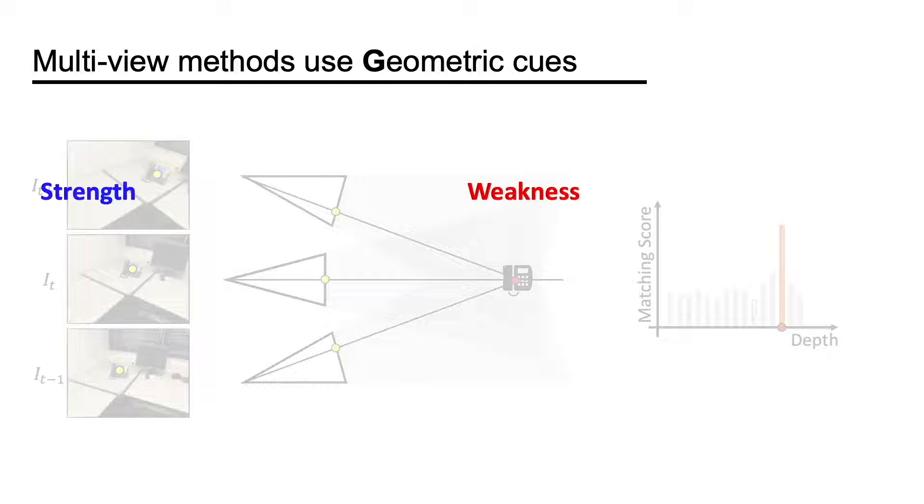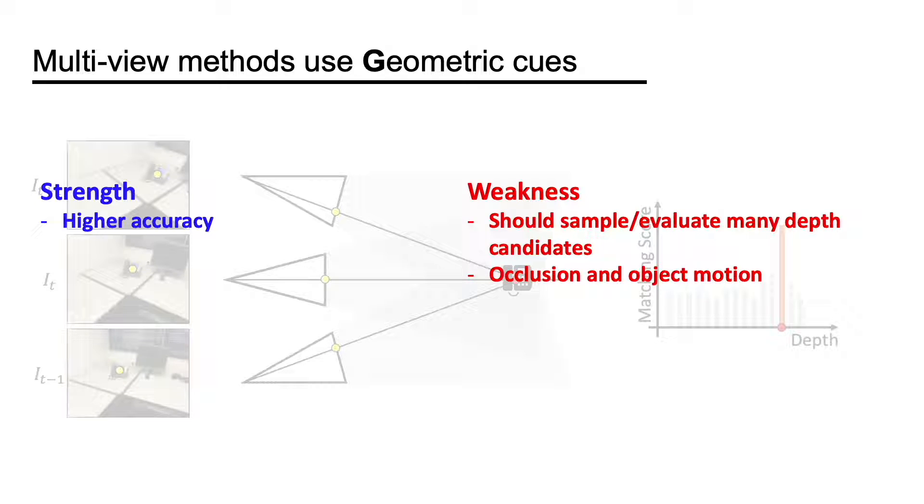Assuming multi-view consistency significantly improves the accuracy. However, a large number of depth candidates should be evaluated, and multi-view consistency can be violated in the presence of occlusion and object motion. Lastly, the multi-view matching becomes ambiguous for textureless and reflective surfaces.